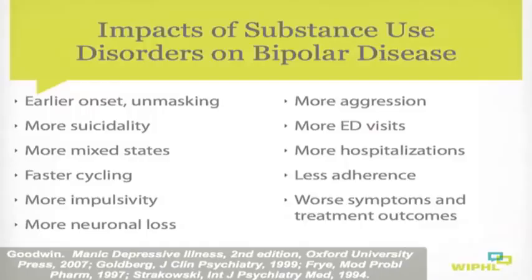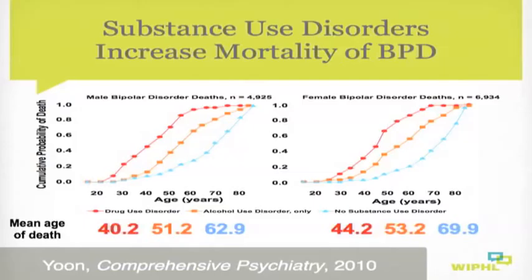Another reason to screen for substance use disorders among these patients is that these disorders shorten lifespans. This slide depicts the results of a large population study focusing separately on males and females. Those without substance use disorders live the longest, those with alcohol use disorders suffered shorter lifespans, and individuals with drug use disorders had the shortest lifespans. It's imperative that we proactively identify substance use disorders and intervene accordingly.